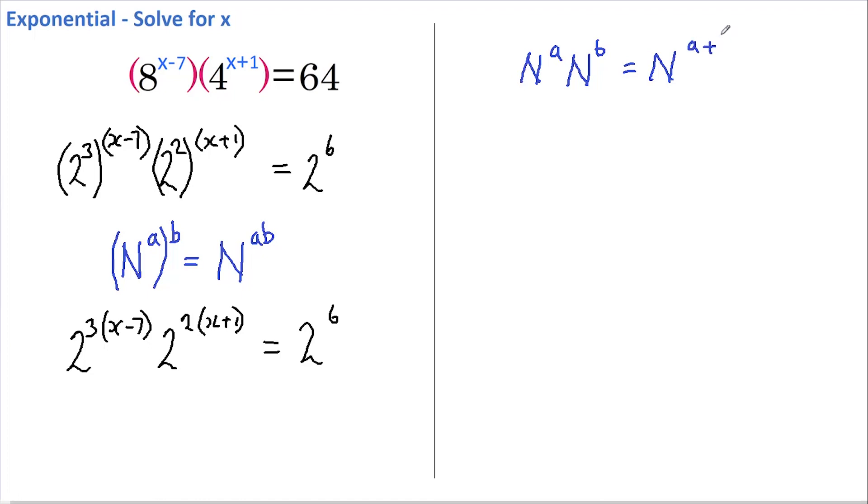Therefore, we can rewrite this as 2, and I'm going to expand this out as we go along, to the power of 3x minus 21 plus 2x plus 2, and that all equals 2 to the power of 6.